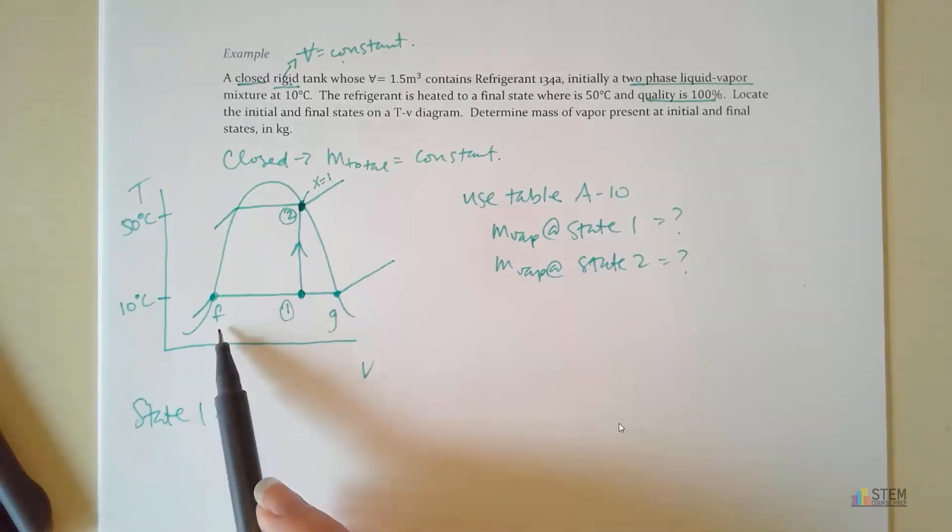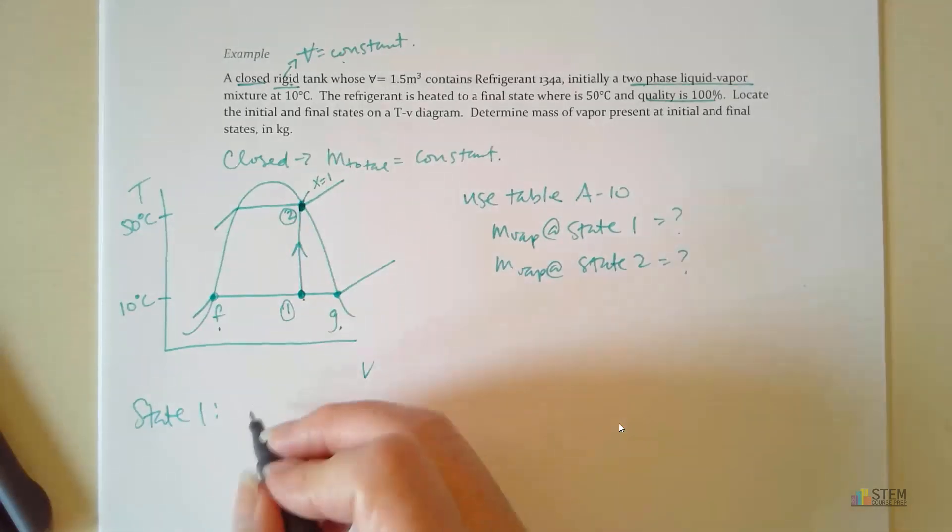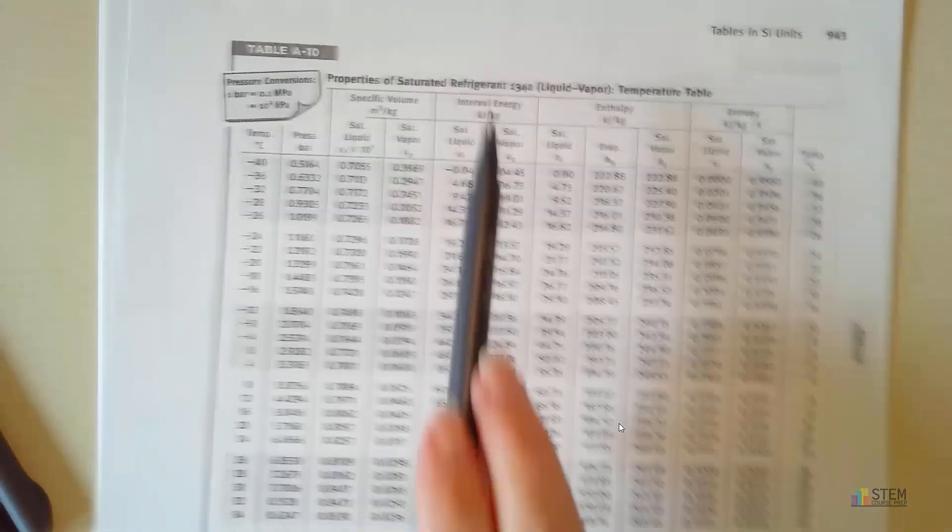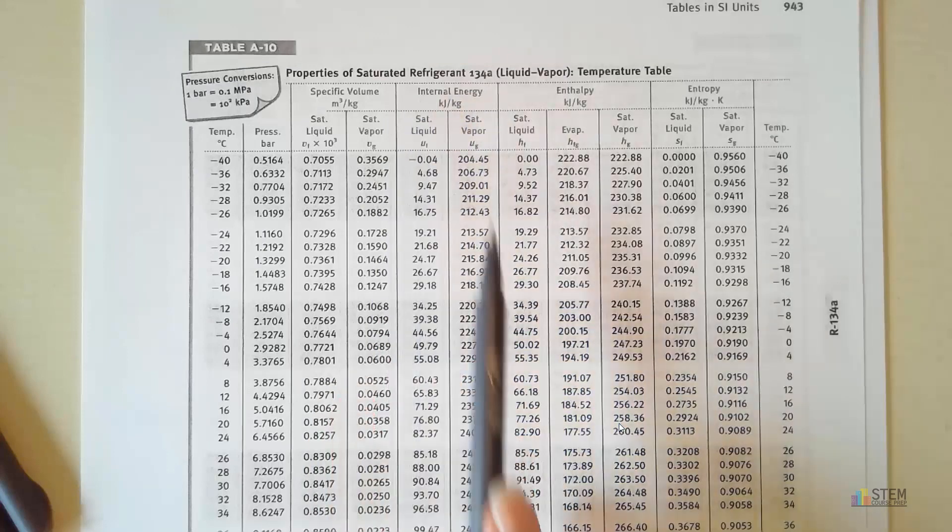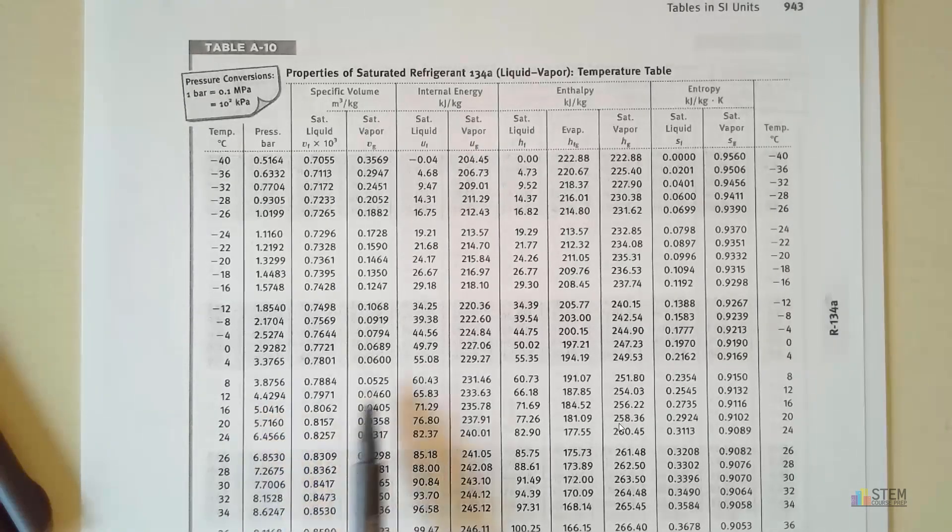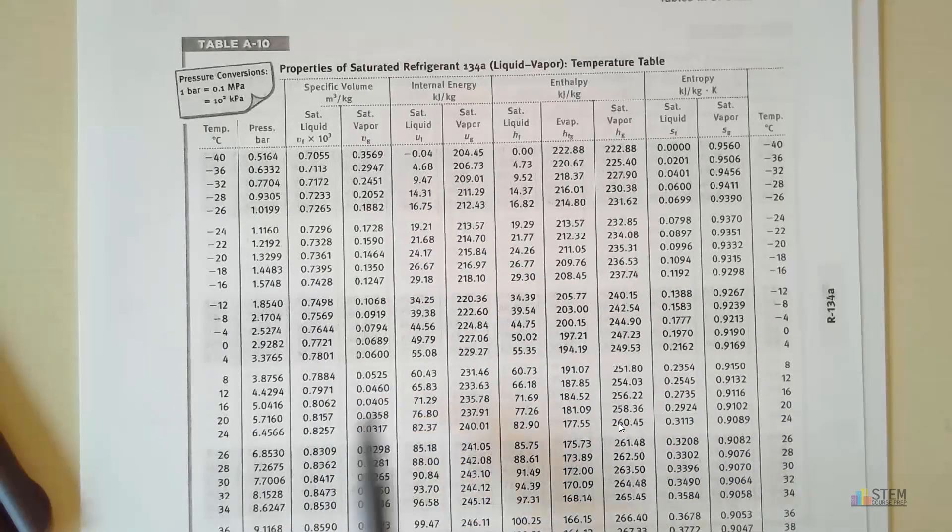Let's focus on state one first. Now for state one, we're going to have to figure out where we're located. So we need to pull out VF and VG, and we can try to get quality. If you go to the table, these will be the three pieces of information we're going to pull out. So A10, that's the table for refrigerant. Our temperature is at 10 degrees. So if you look on that table, notice we're refrigerant. This is the saturated table. We are at 10 degrees. There is no 10 degrees. There's 8 and 12, but no 10.